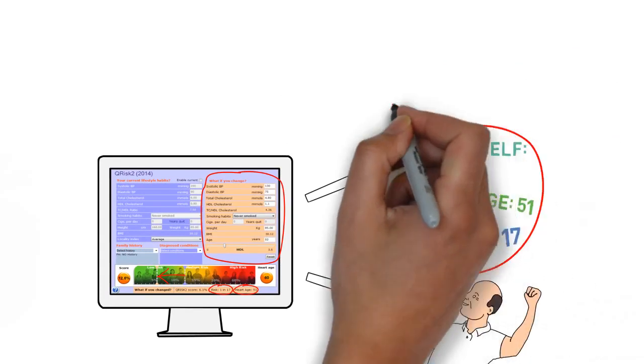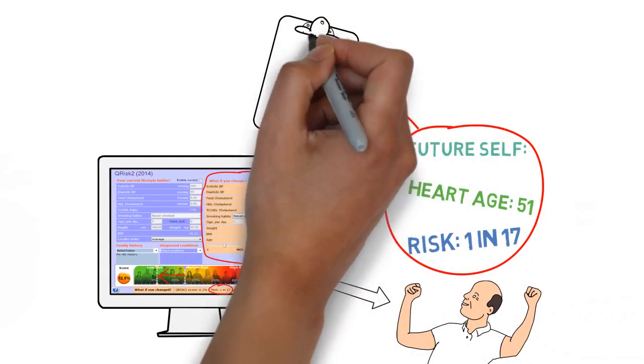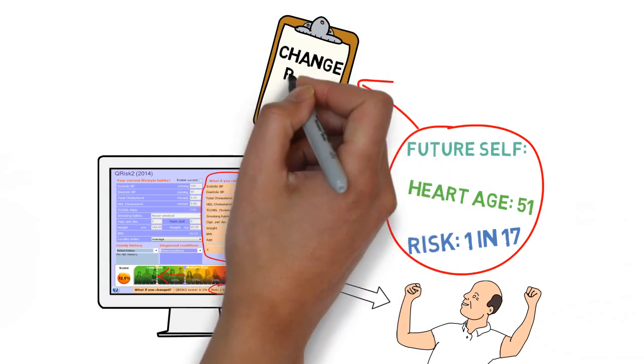In doing so, practitioners are able to give real substance to a client's idea of their future self. It's around this set of potential circumstances that the practitioner can work with a client to create an effective plan for moving forward.